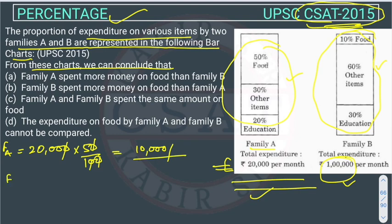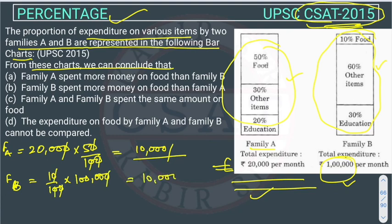Family A spent more money on food than family B? Let's check. Family B is spending 10% on food — 10% of 1 lakh. Cancelling the zeros, 10% of 1,00,000 is 10,000. So both families are spending 10,000 on food.